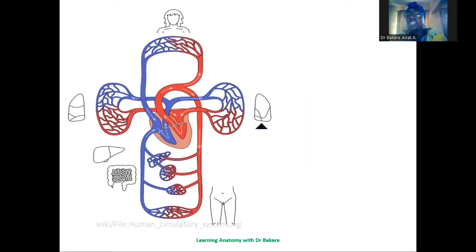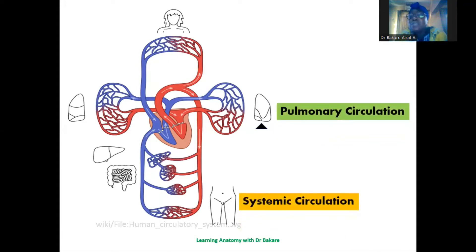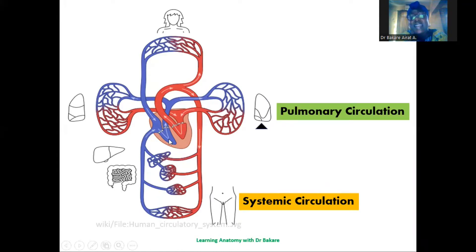In establishing the divisions of the circulatory system, we say that the circulatory system can be divided into the pulmonary circulation and also the systemic circulation. The pulmonary circulation is the circulation that occurs between the heart and the lungs. The heart, of course, is responsible for pumping blood into the vessels so that the blood can reach the other regions of the body.